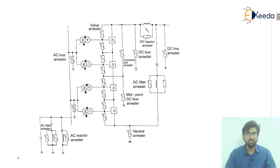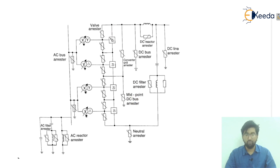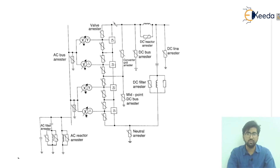For the DC transmission system, the DC reactor will have a DC reactor arrestor, and the DC filter will have a DC filter arrestor. At the midpoint, there is the midpoint DC bus arrestor. Overall, each and every piece of equipment is connected with an arrestor in parallel. I hope you have understood all these concepts related to this. Thank you so much.